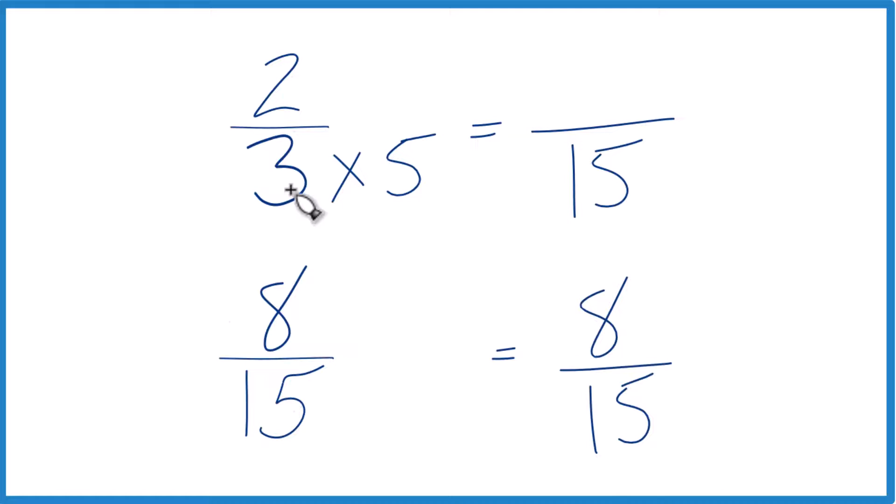And because we multiplied the denominator by five, we do need to multiply the numerator by five up here. Five over five, it's just one. So we're multiplying by one. We won't change the value. Just the way it's represented. Two times five is ten. And ten-fifteenths, that's an equivalent fraction to two-thirds.